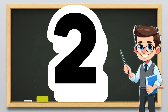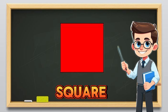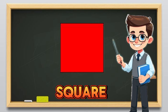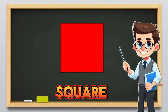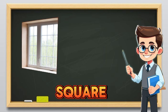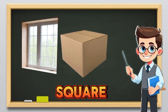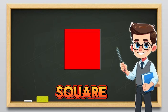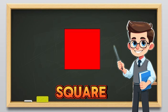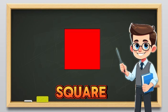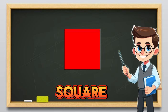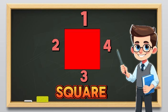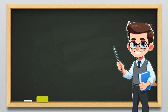Two. Square. A square has four sides, and they are all the same, like a window or a box. Say this with me: square has four sides all the same. Count with me: one, two, three, four.